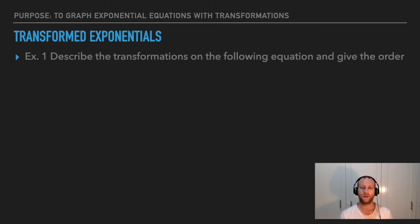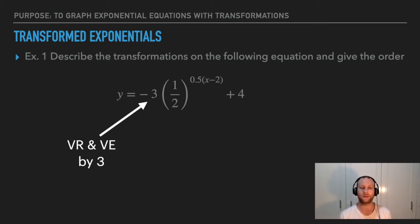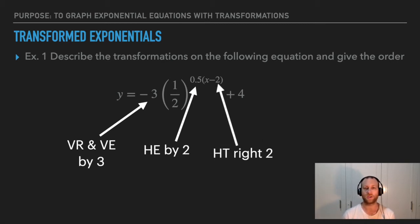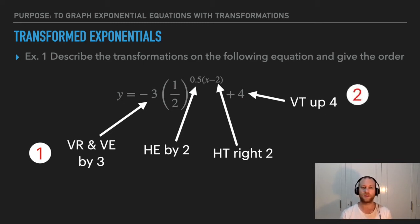Describe the transformations on the following equation and give the order. The original graph is one-half to the power of x — the one-half is just the base, that doesn't affect anything. The negative three out front is a vertical reflection and vertical expansion by a factor of three. The 0.5 is a horizontal expansion by two. The minus two in the exponent means moving horizontally to the right by two, and plus four is vertically up by four. The ordering: do verticals first — vertical reflection and expansion is one, vertical translation is two — then horizontals: horizontal expansion is three, horizontal translation is four.